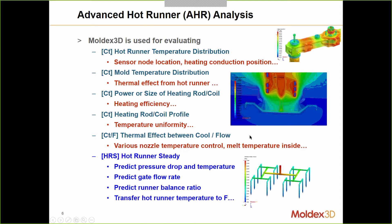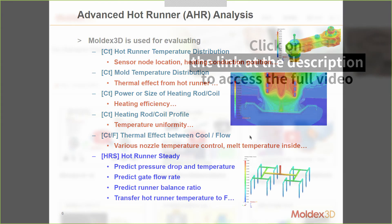We also have the capability of analyzing advanced Hot Runner components, using all the different components that are actually used in designing your Hot Runners — your manifolds, your heater coils, etc. When you use the software for analyzing these, you can look at your sensor node locations, which in reality correlate with your thermocouple sensors, your heat conduction analysis, your mold temperature distribution considering the thermal effect from the Hot Runner, and the heating efficiency of your heating coils or heater rods. This means you can analyze what power level or what size is appropriate.